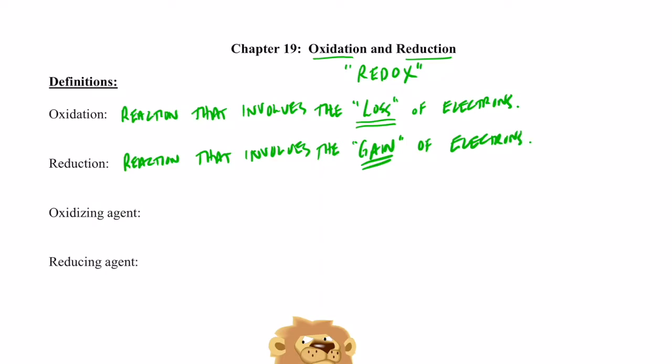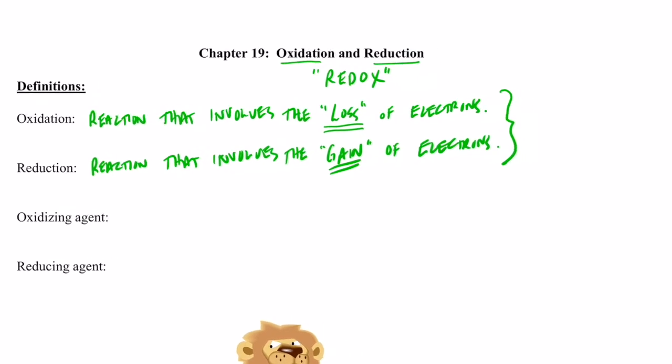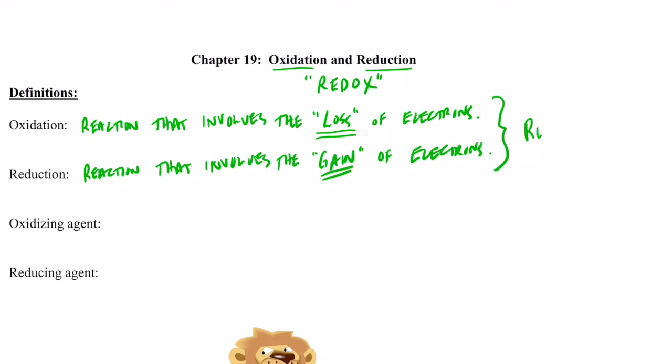Now to gain electrons, they can't come out of thin air. We just can't magically produce electrons. They have to come from somewhere. So where do they come from? That's right. They come from the substance that lost electrons. So these two reactions must occur together. That's why we call them redox reactions.